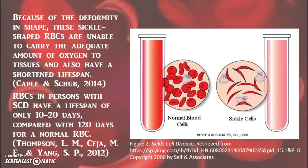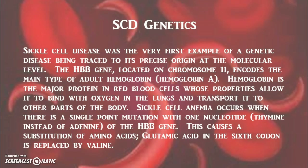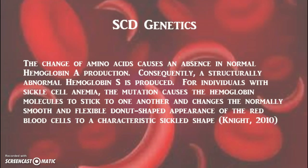Sickle-shaped red blood cells are unable to carry adequate amounts of oxygen to tissues in the body. Unlike normal RBCs that have a lifespan of 120 days, these cells live only about 10 to 20 days. Sickle cell disease was the very first example of a genetic disease being traced to its precise origin at the molecular level. A mutation with one nucleotide in a chain of amino acids results in a substitution of valine, resulting in the structurally abnormal hemoglobin S being produced, causing the characteristic sickle-shaped cells.